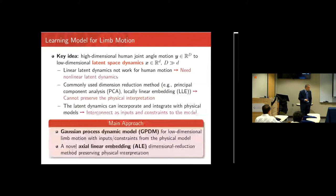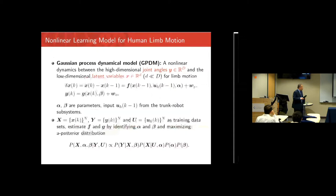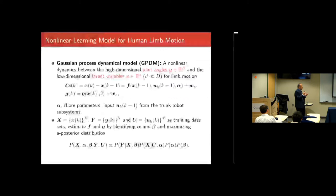The Gaussian Process Dynamic Model has been used for human motion modeling. Basically, you have the latent variable X in the lower-dimensional space, and the observable space is the joint angles. You have a nonlinear mapping F and G that you try to estimate. Given the observation — which is joint angles — and the defined fictitious control, you maximize the posterior distributions using learning-based methods.